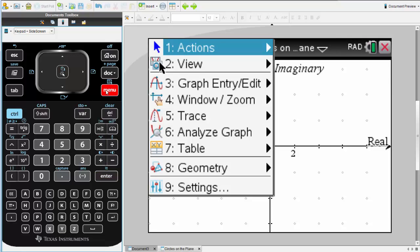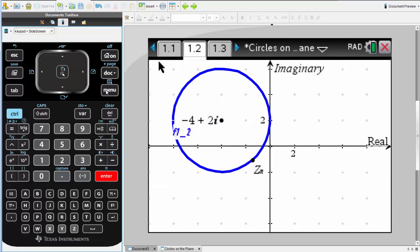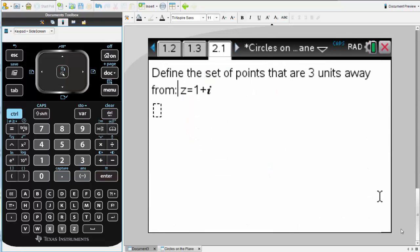And there we have our circle. Erasing our geometry trace. And there's the set of points defined by our equation. Now it's your turn.